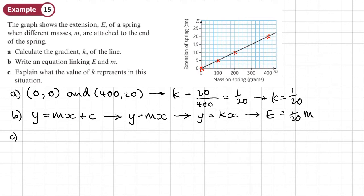Now, part c, explain what the value of k represents in this situation. Now, remember, the value of k, the gradient, represents what happens to this value for every one change in this value. So if you've increased the mass by 1 gram, the extension will go up by 1/20th of a centimetre. So we can write something like this.